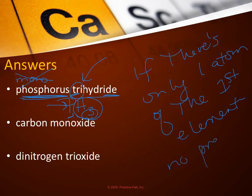So that's only if there's one of them. If there were two of them, you'd still use di. If there were three, you'd still use tri. Now, kind of tricky again is if there's only one of the second element, you do use a prefix.